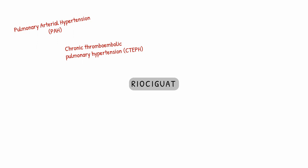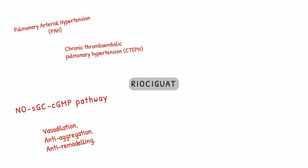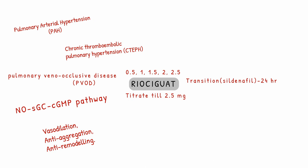To summarize: Riociguat is used for pulmonary arterial hypertension and chronic thromboembolic pulmonary hypertension. The pathway involved is the nitric oxide–soluble guanylate cyclase–cGMP pathway, producing vasodilation, anti-aggregation, and anti-remodeling. It is available in 0.5, 1, 1.5, 2, and 2.5 mg variants, titrated from a low dose to 2.5 mg over intervals of at least 2 weeks. A 24-hour drug-free period is required when switching between sildenafil and Riociguat. Monitor for pulmonary edema, which may indicate pulmonary veno-occlusive disease; discontinue Riociguat if this occurs.